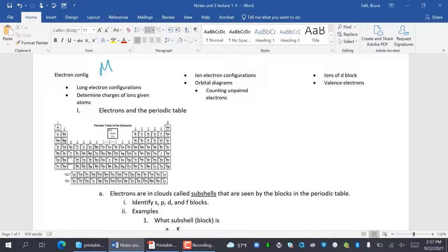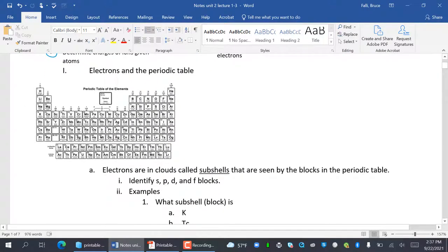Hi everybody, this is Mr. Folley, and welcome to Podcast 2.1, where we are going to talk about electron configurations. So our topics are going to be long electron configurations, determining the charges of ions given atoms, ion electron configurations, orbital diagrams, counting unpaired electrons, ions of the D block, and valence electrons. That's a lot. So let's see if we can do it in a reasonable amount of time.